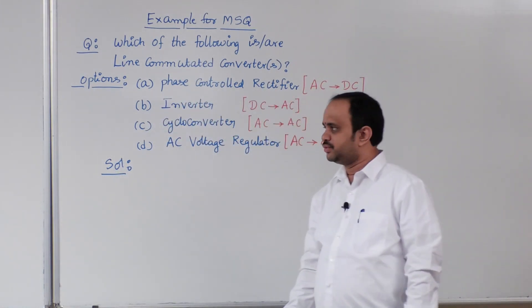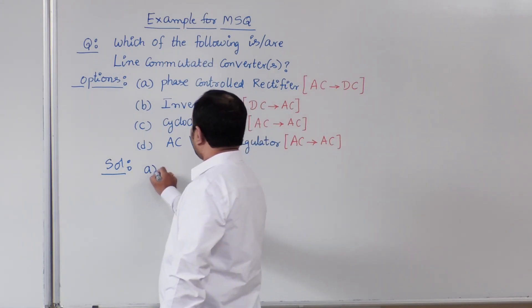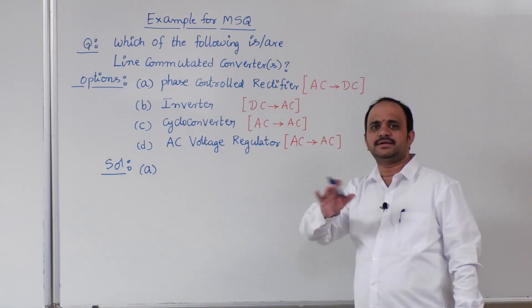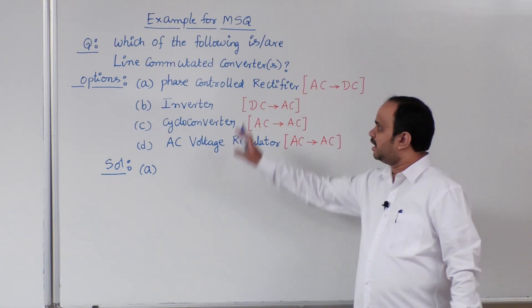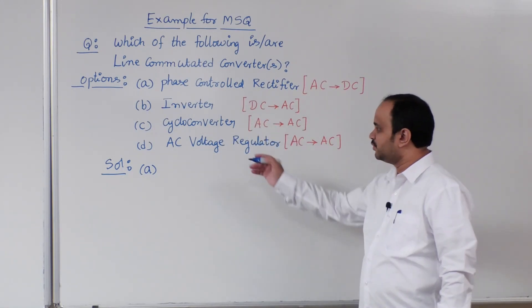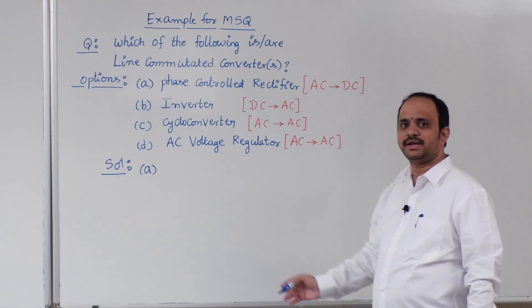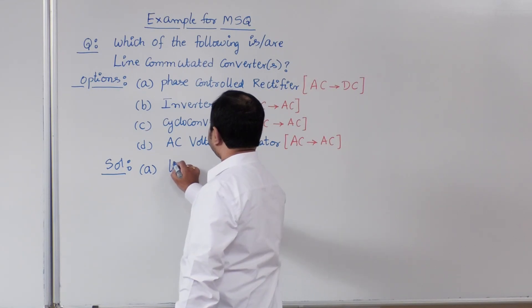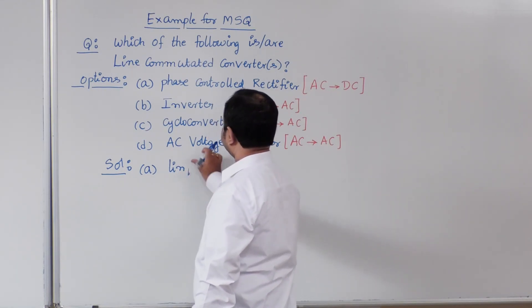Let us discuss as a solution. Coming to phase controlled rectifier. What are all different commutation schemes are possible in these circuits? If you write down one by one, you can get the answer easily. For phase controlled rectifiers, there is a line commutation technique.